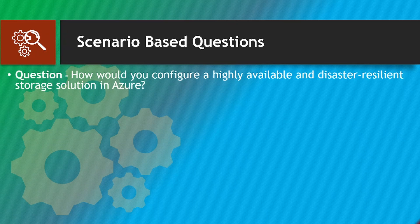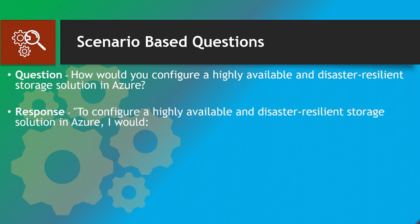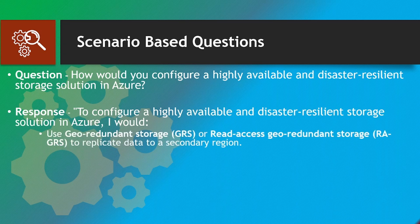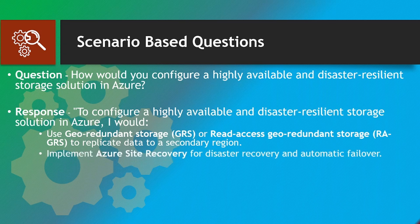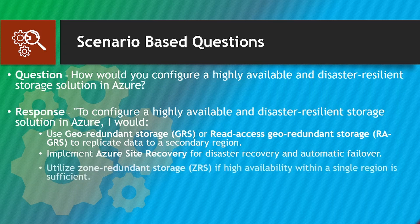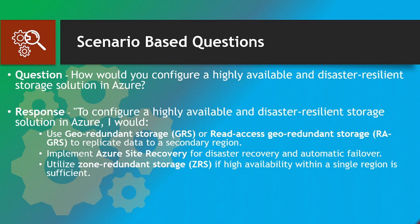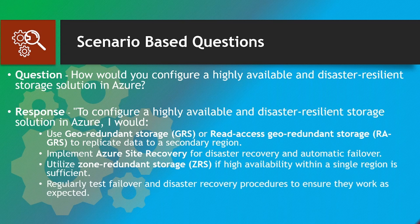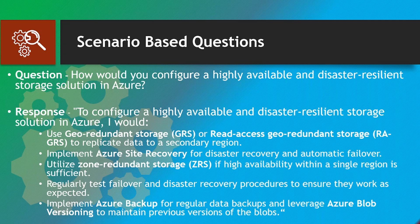Now we will move to scenario-based questions. The first scenario-based question: how would you configure a highly available and disaster-resilient storage solution in Azure? To configure such a solution, I would use Geo-Redundant Storage (GRS) or Read-Access Geo-Redundant Storage (RA-GRS) to replicate data to a secondary region. I would implement Azure Site Recovery for disaster recovery and automatic failover, utilize Zone Redundant Storage if high availability within a single region is sufficient, regularly test failover and disaster recovery procedures, implement Azure Backup for regular data backups, and leverage Azure Blob versioning to maintain previous versions of blobs.